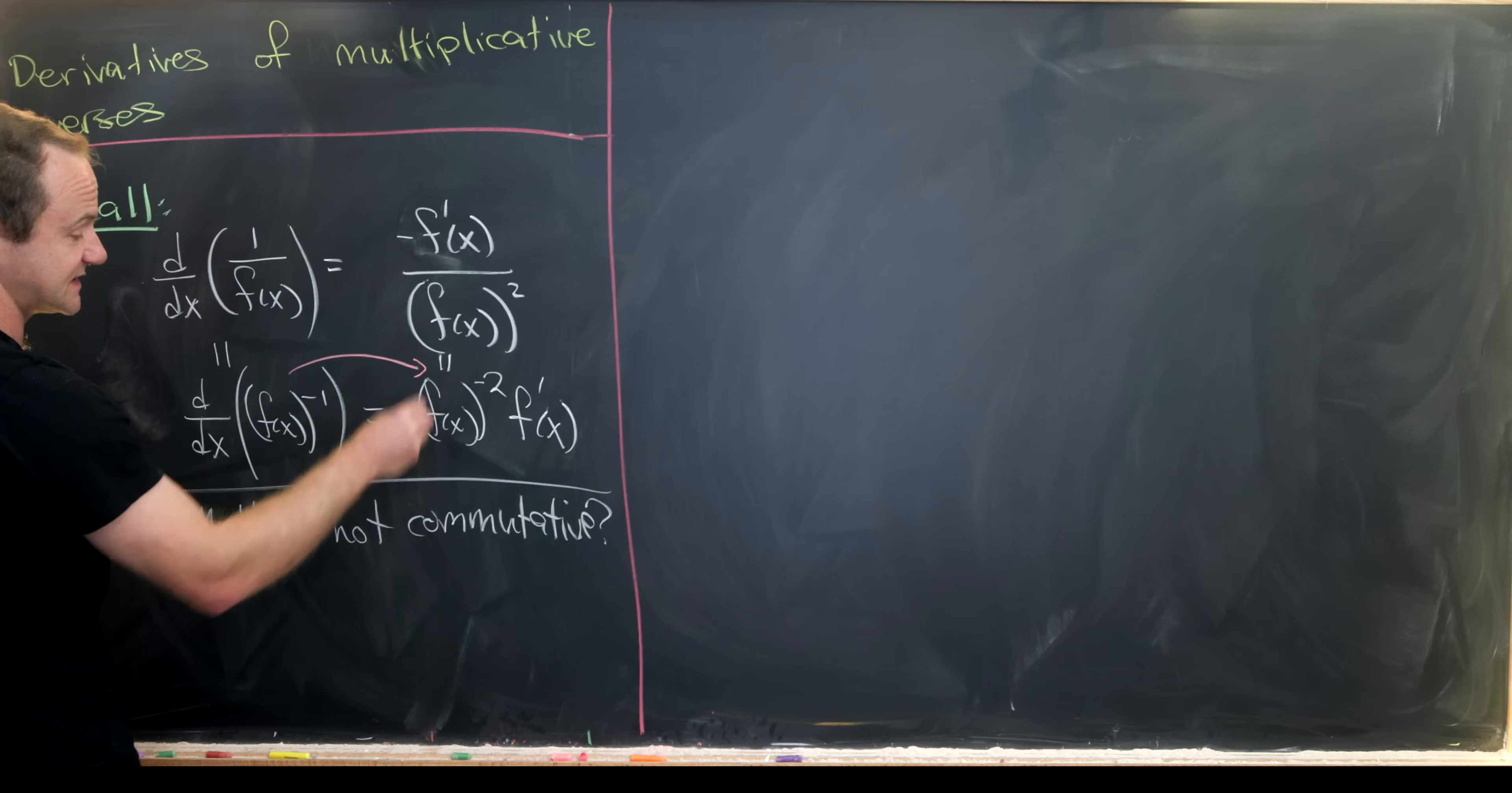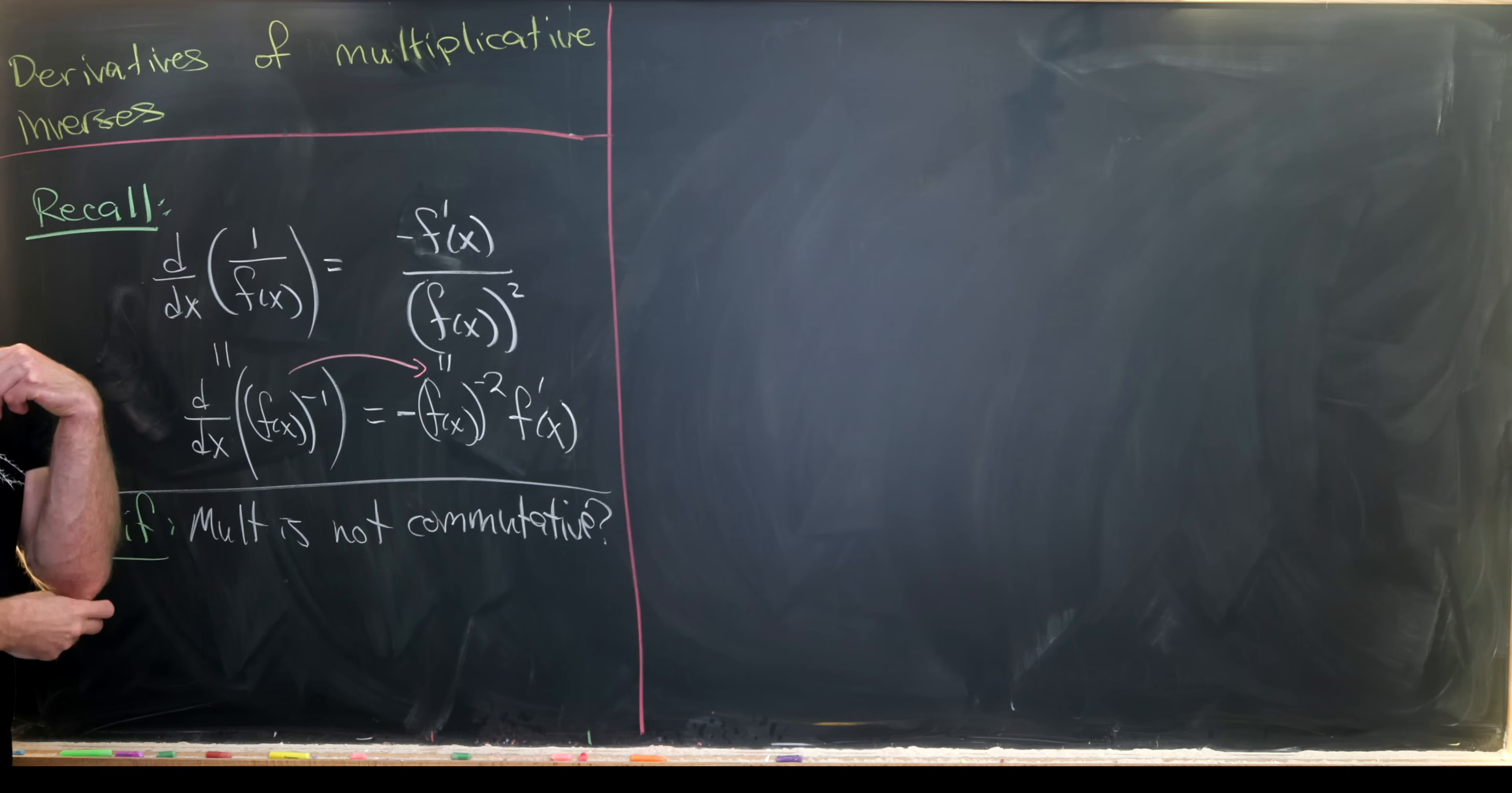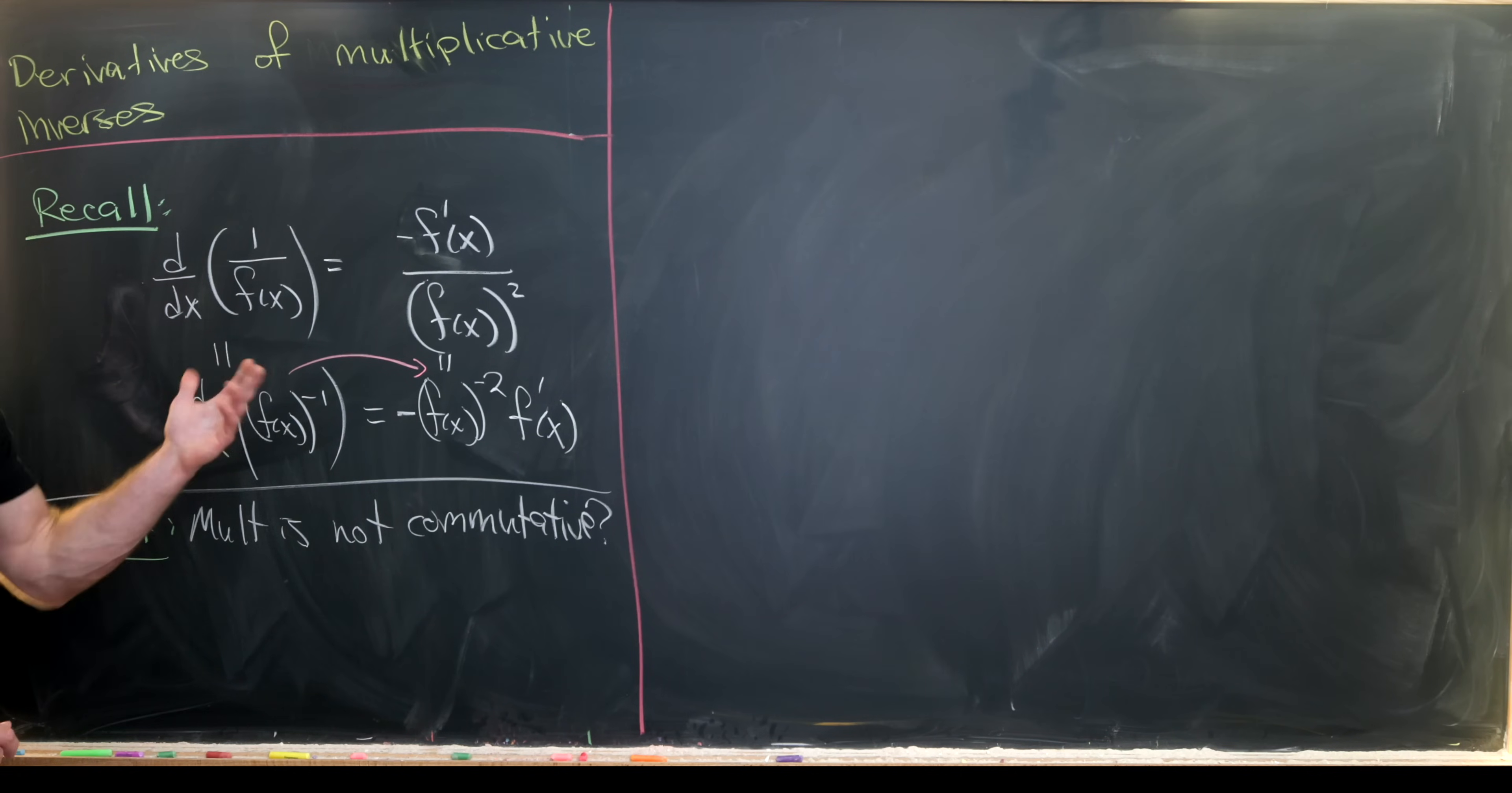The step where we did it was this step right here where we used the chain rule. You can't really see that without the proof of the chain rule, but we won't go into that.